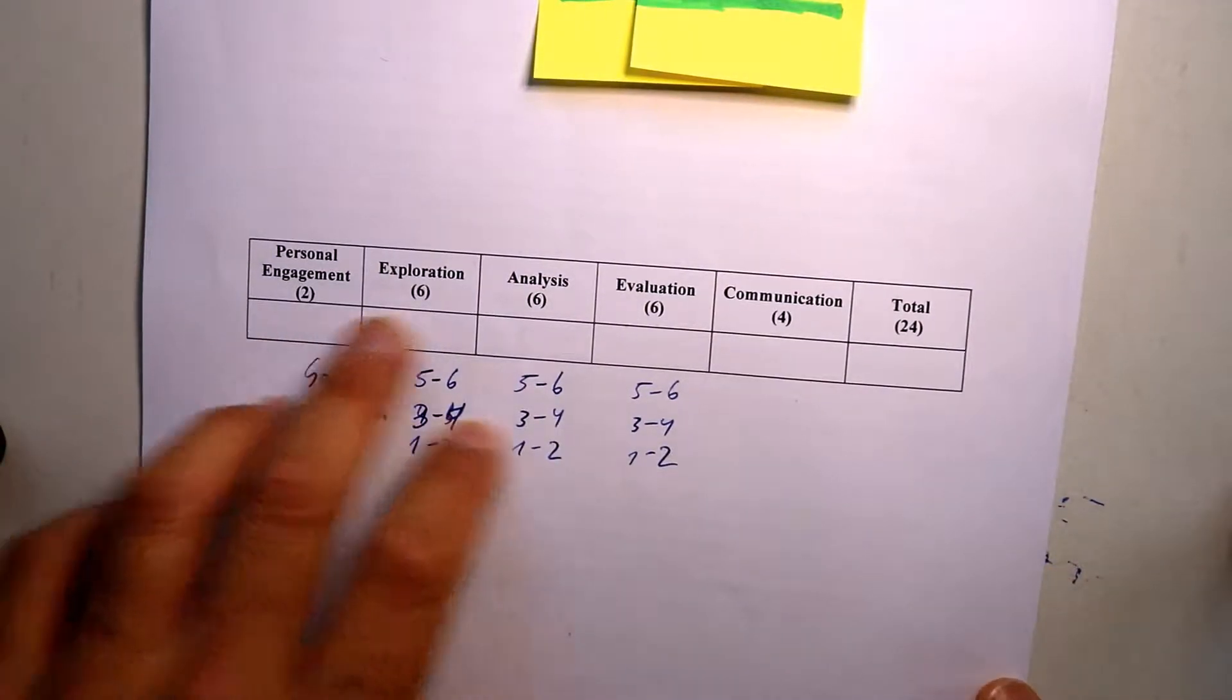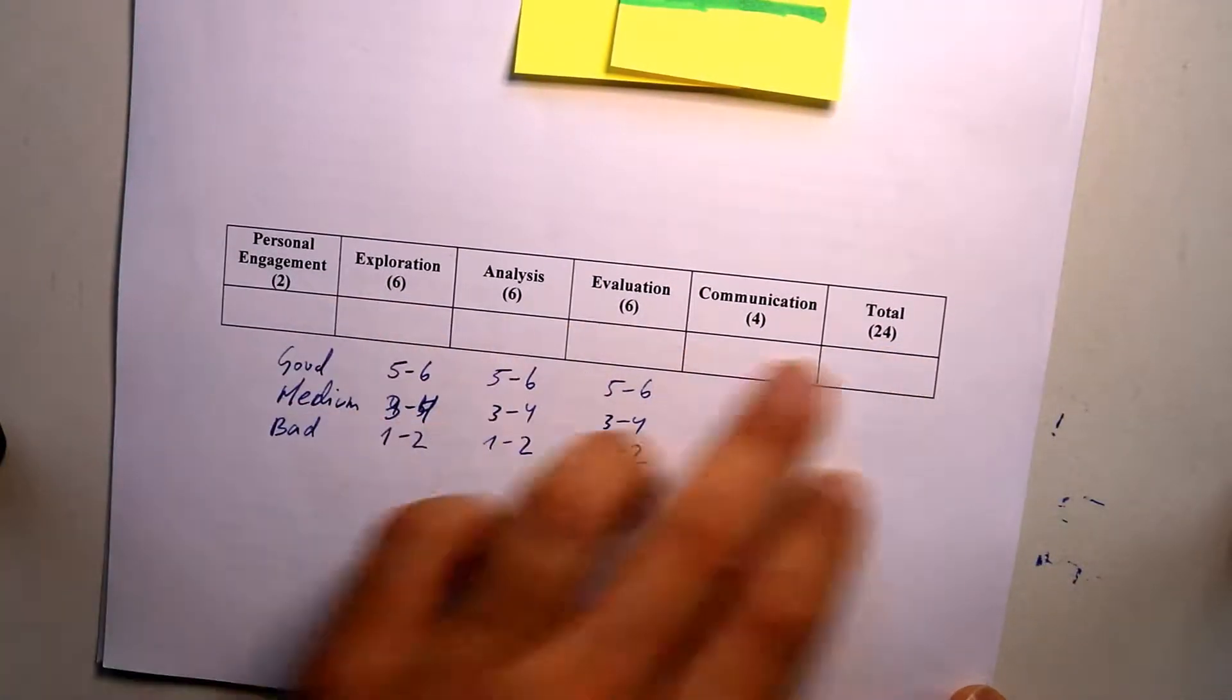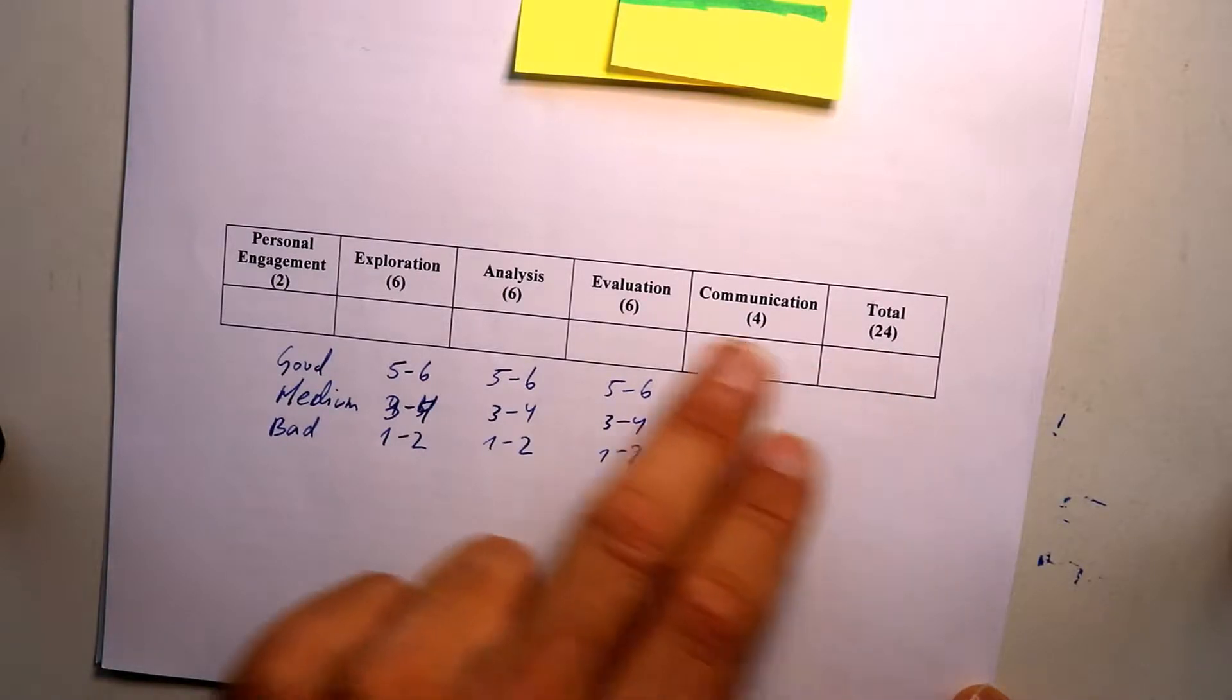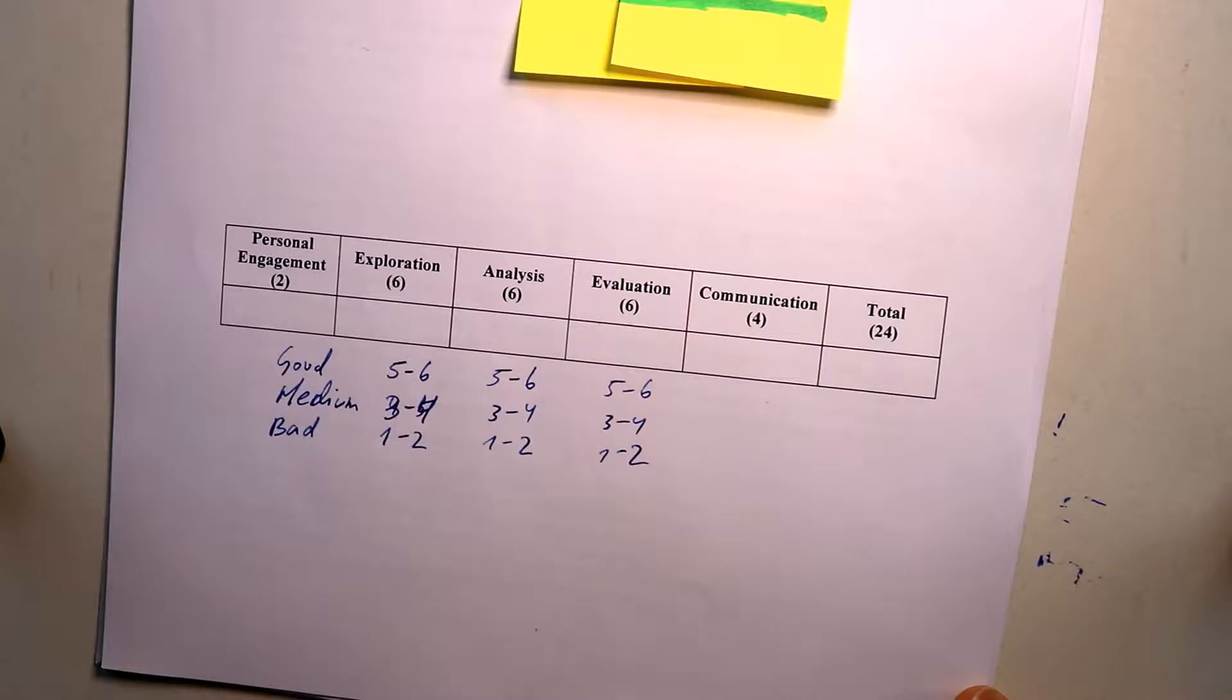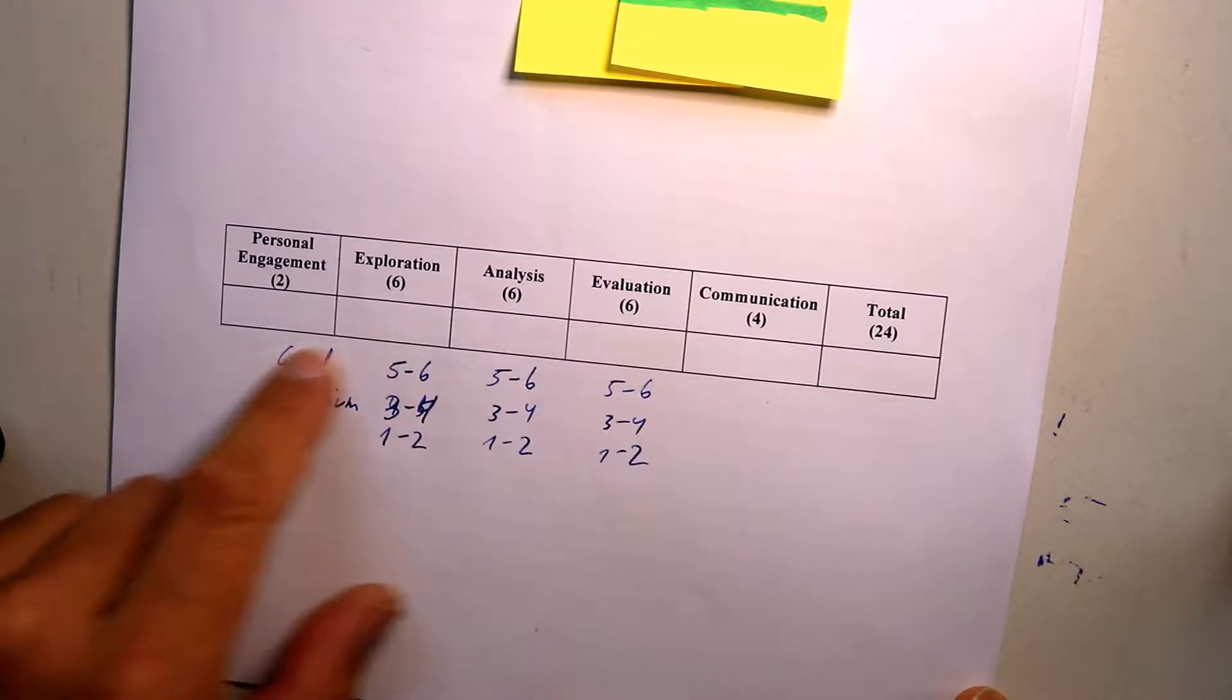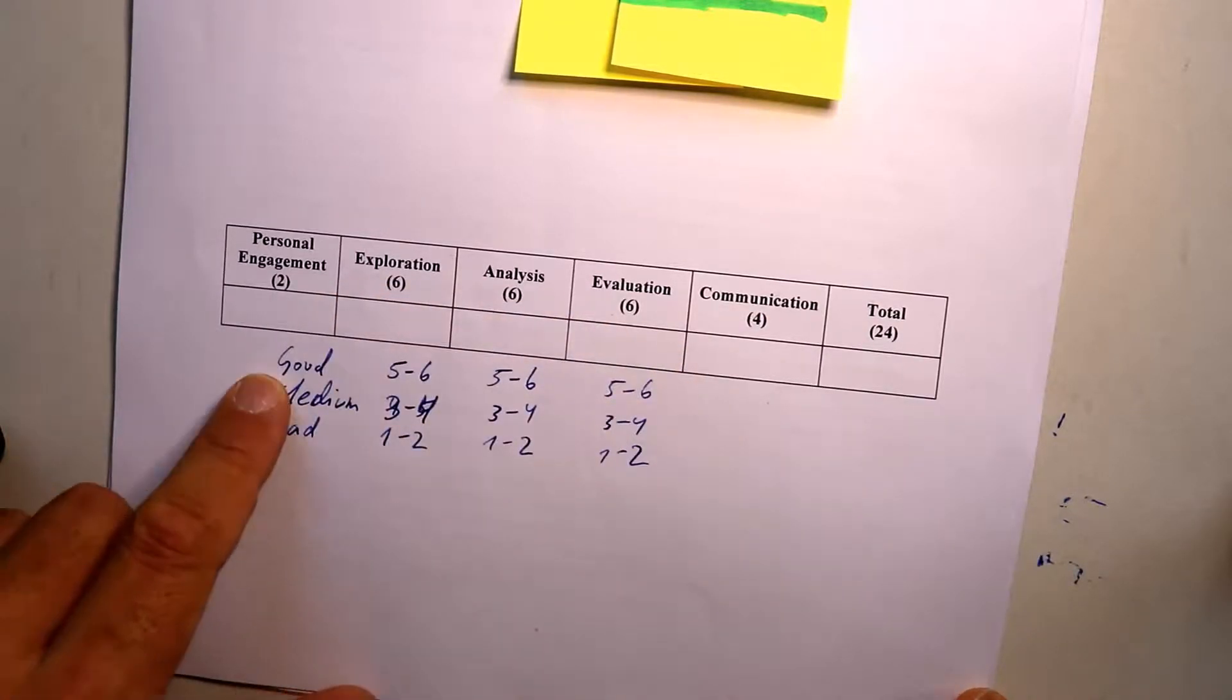And what I've done is the following: I put it down here, the marking scale. It's out of 24 points and specifically I'll be looking at the exploration, analysis, and evaluation here. And I'm going to quickly estimate whether these parts here are good, medium, or bad.